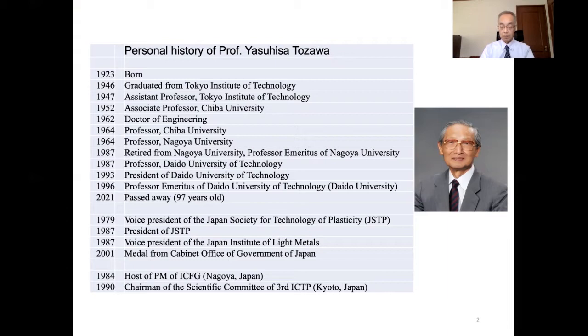He worked as an assistant professor at the Tokyo Institute of Technology, and was appointed as an assistant professor at Chiba University in 1951. In 1964, he was appointed as a professor at the newly established Department of Steel Engineering at Nagoya University. He retired from the university in 1987, and at that same time received the title of Professor Emeritus of Nagoya University. He was hired as a professor at the Daido Institute of Technology and was appointed president of the university in 1993.